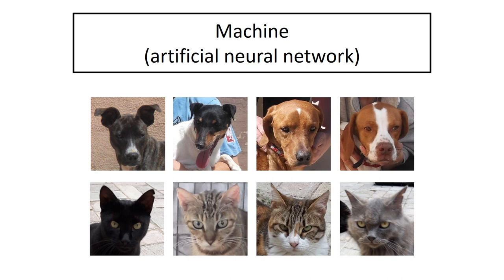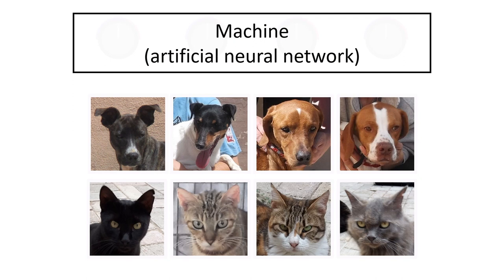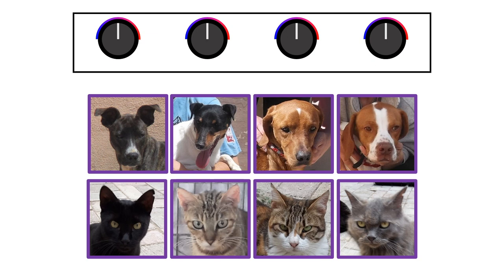And if it is of a dog, then the photo will have a red border, otherwise it will have a blue border. The neural network doesn't know how to do it, but it does have knobs that you can set in order to say what's important and what isn't. For example, if we turn the first knob, let's say that it controls how important having a black nose is.